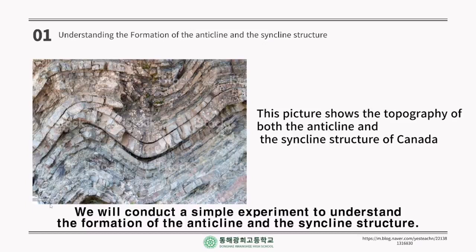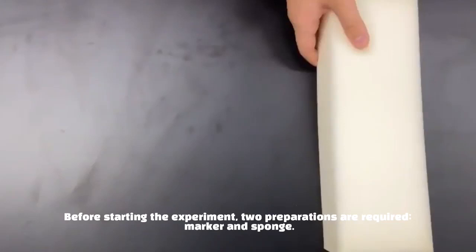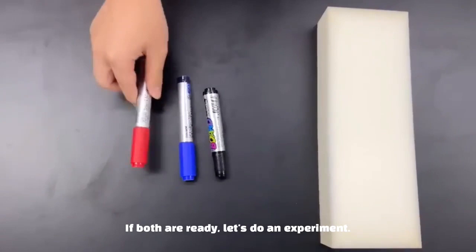Today's experiment is to model the structure of the anticline and the syncline using a sponge, as shown in the figure. Before starting the experiment, two preparations are required: a marker and a sponge. If both are ready, let's do the experiment.